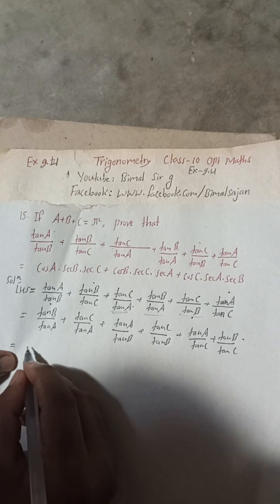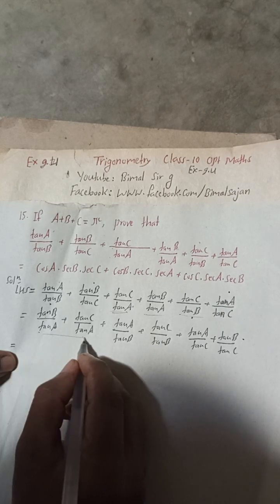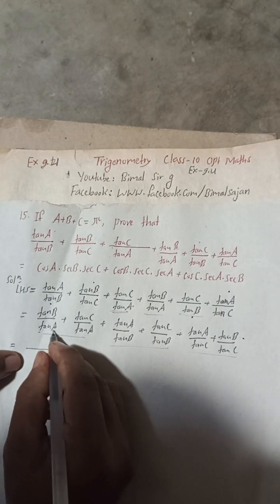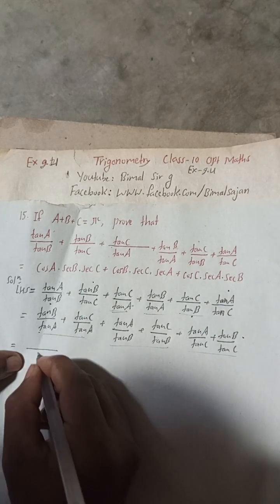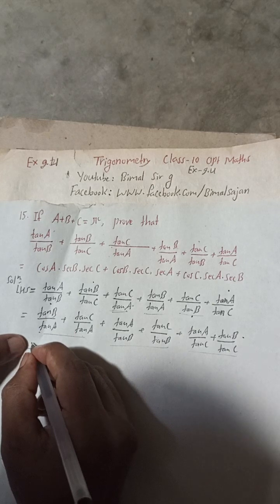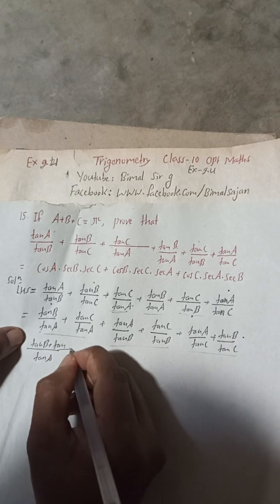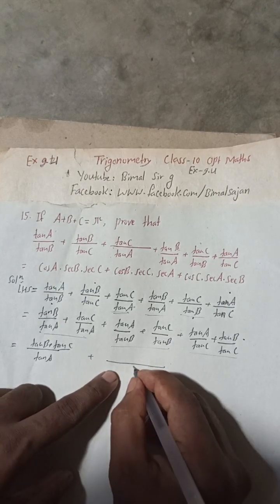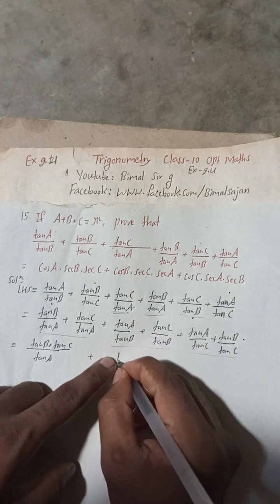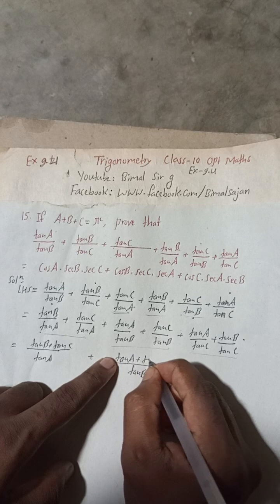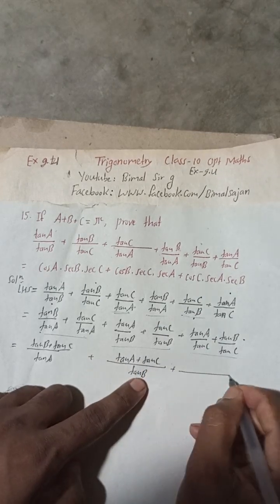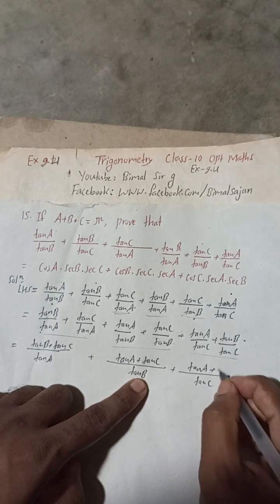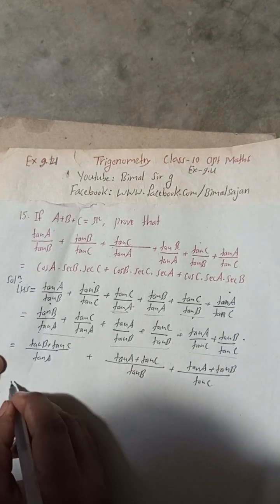Now from the first pair with denominator tan(a), the LCM is tan(a) and the numerator becomes tan(b) + tan(c). Similarly for the second pair the LCM is tan(b) and the numerator is tan(a) + tan(c). For the third pair the LCM is tan(c) and the numerator is tan(a) + tan(b).